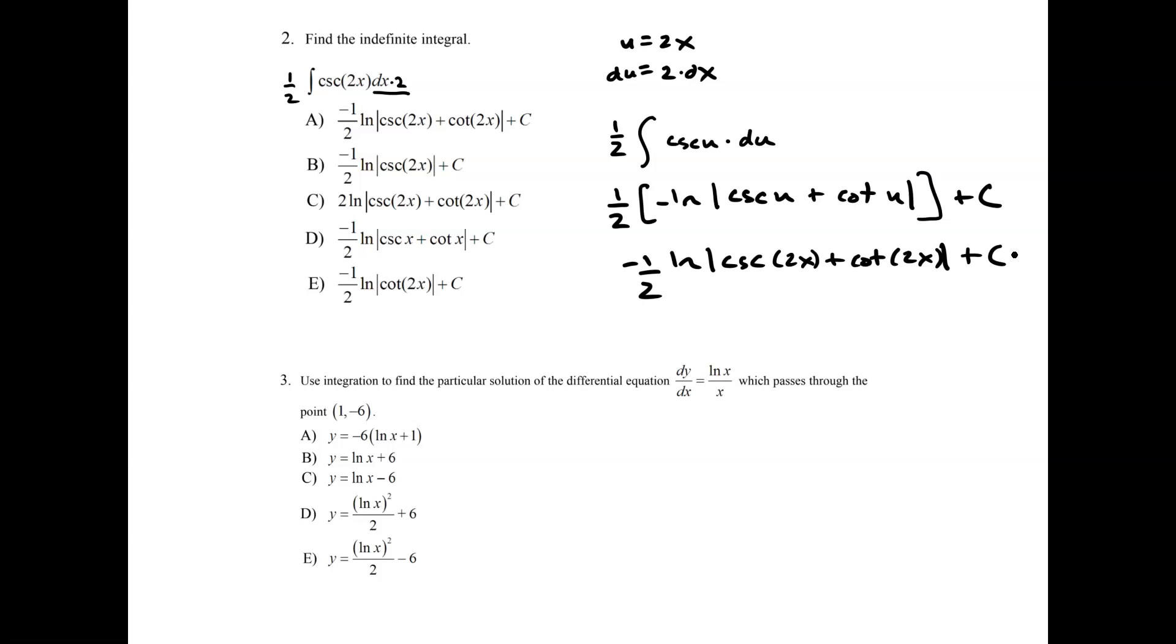So this becomes negative 1/2 ln absolute value of cosecant of 2x plus cotangent of 2x plus c. And this appears to be one of these choices. Which one is it? Is it negative 1/2 ln cosecant of 2x plus cotangent of 2x plus c? Yes, it's a.